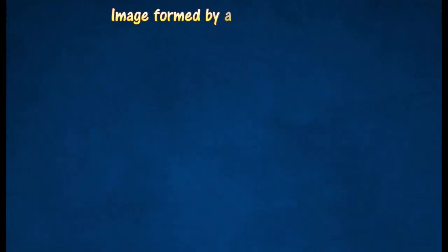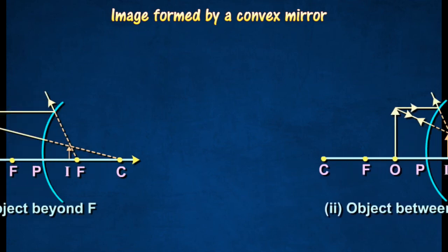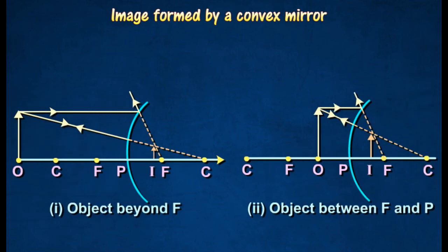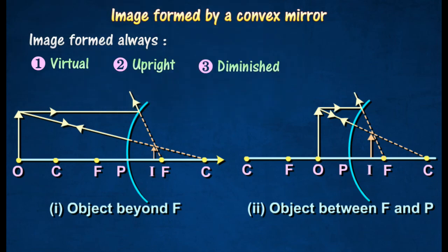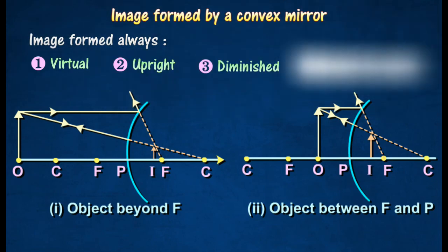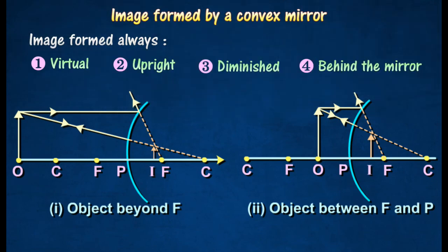Image formed by a convex mirror. For a real object placed at any distance in front of a convex mirror, the image formed is always virtual, upright, diminished, and behind the mirror.